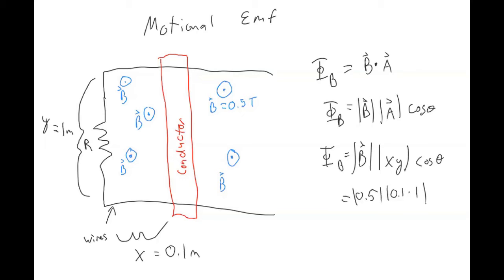Now, what is the angle between the magnetic field and the surface area vector? Remember, the surface area vector points perpendicular to the surface. The magnetic field points out of the screen and the surface area vector also points out of the screen, so the angle between them is 0. Cosine of 0 is 1, so the magnetic flux is 0.5 times 0.1 times 1, which equals 0.05 Tesla·meters squared.